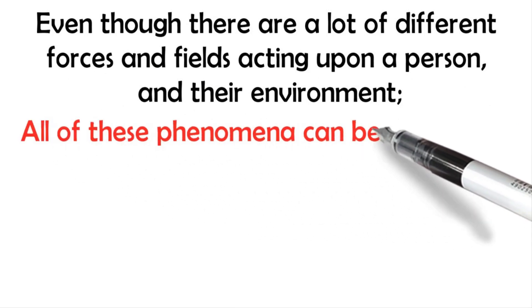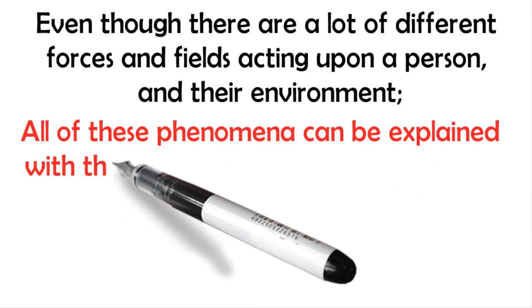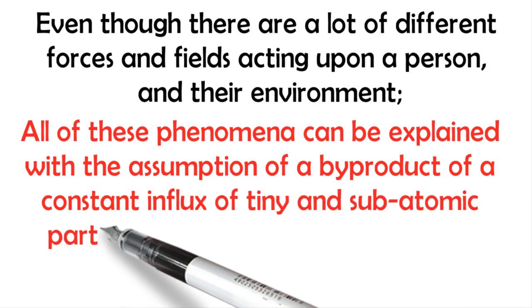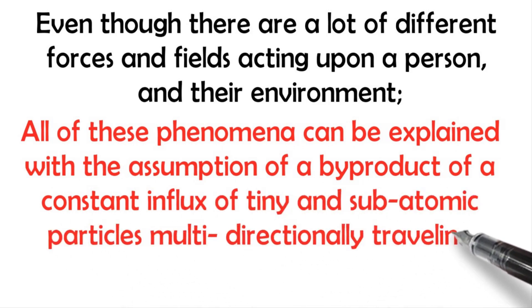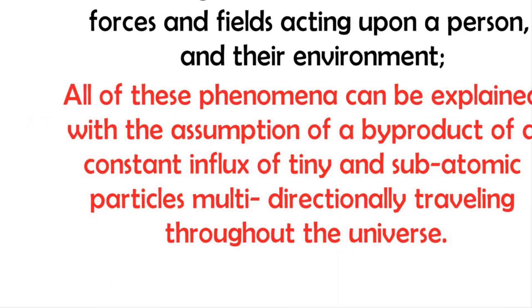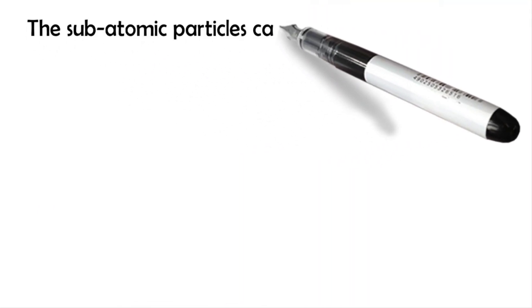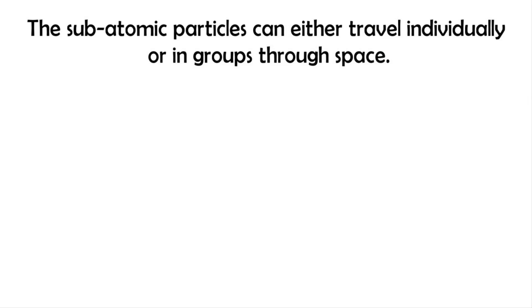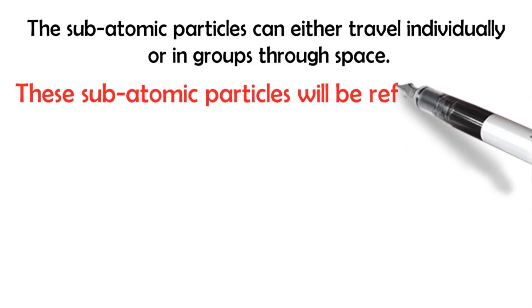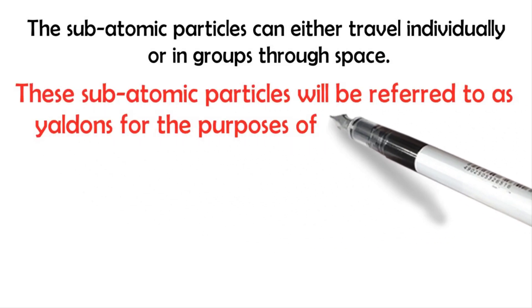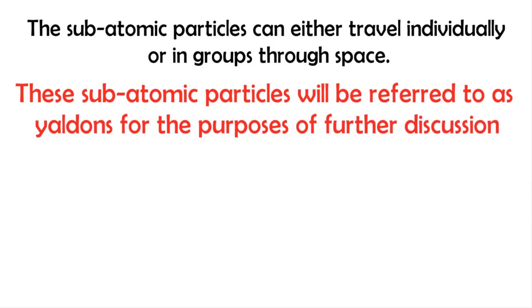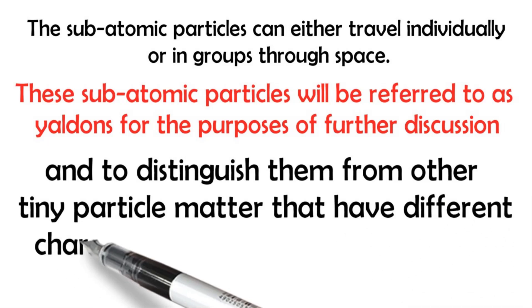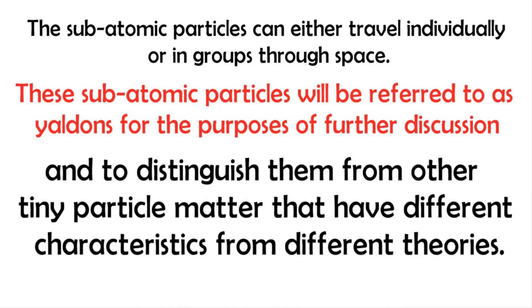All these phenomena can be explained with the assumption of a byproduct of a constant influx of tiny and subatomic particles multidirectionally traveling throughout the universe. The subatomic particles can either travel individually or in groups through space. These subatomic particles will be referred to as Yaldons, for the purpose of further discussion, and to distinguish them from other tiny particle matter with different characteristics from different theories.